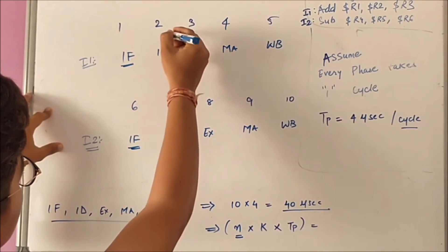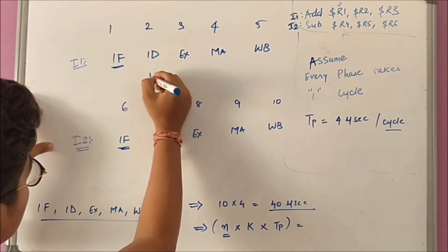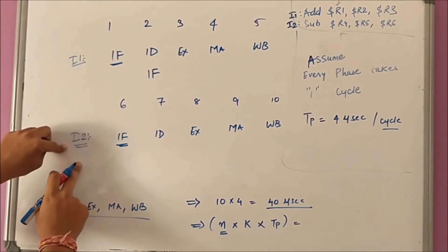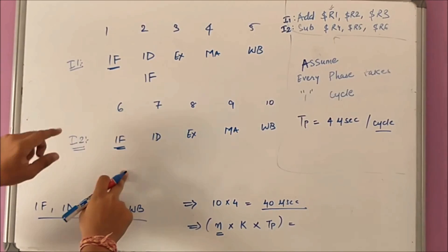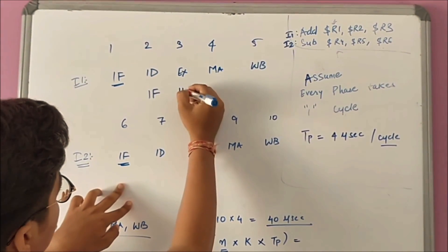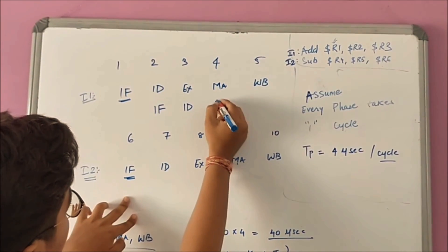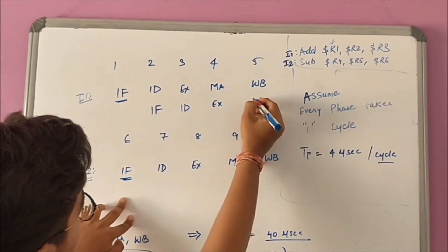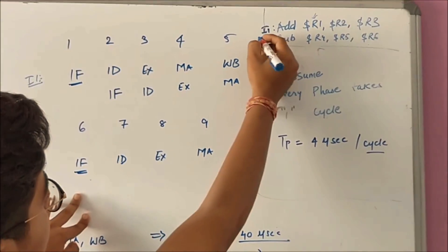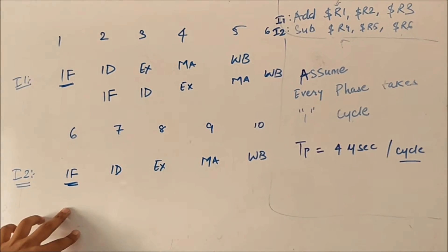So what we will be doing is: at the second cycle we will be doing instruction fetch of the second instruction. It will proceed like instruction decode, then execution, then memory access, and by the fifth and sixth cycle we will be completing both the instructions. You can see the difference — this is called pipelining, because we are minimizing the time of execution of both instructions.